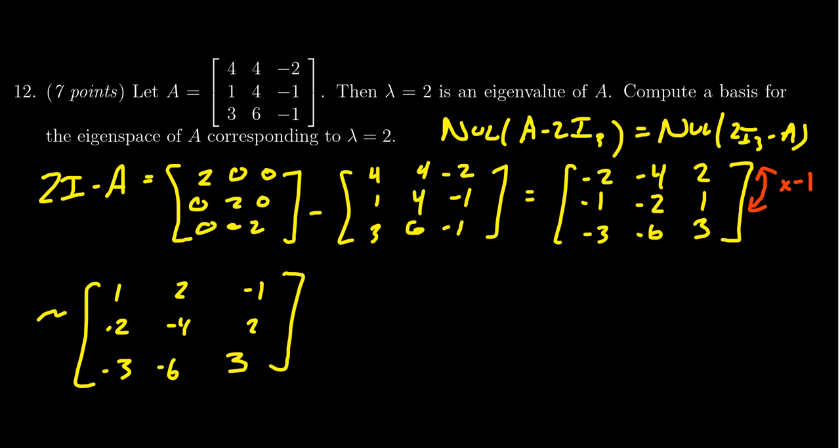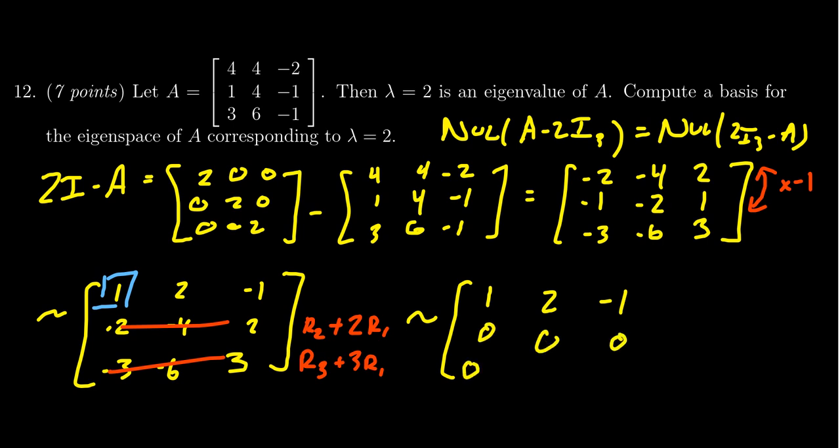And so now having a 1 in my pivot position, I can notice below the second and third rows are just scalar multiples of the first row. I'm going to take row 2, add to it 2 times row 1. That's going to cancel out to give me a row of zeros. I'm going to do the same thing for row 3, but this time I'm going to take 3 times row 1. Then we find the RREF of this matrix 2I minus A will be 1, 2, negative 1, 0, 0, 0, 0, 0, 0.